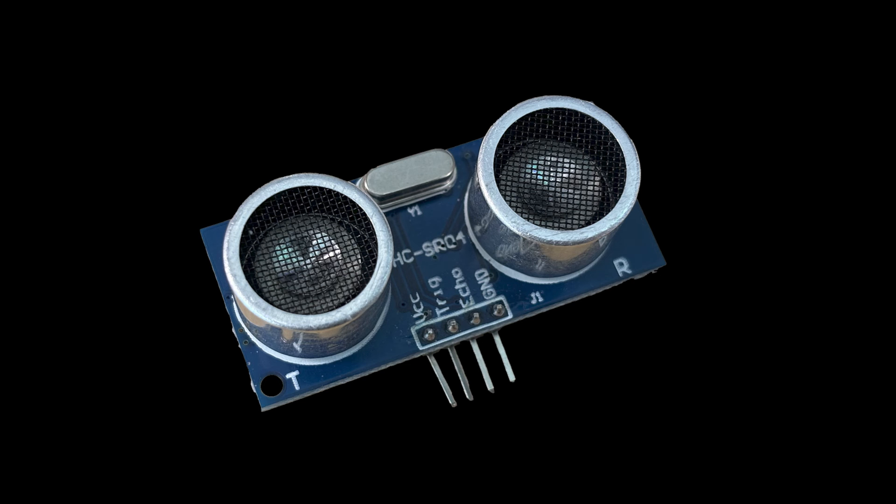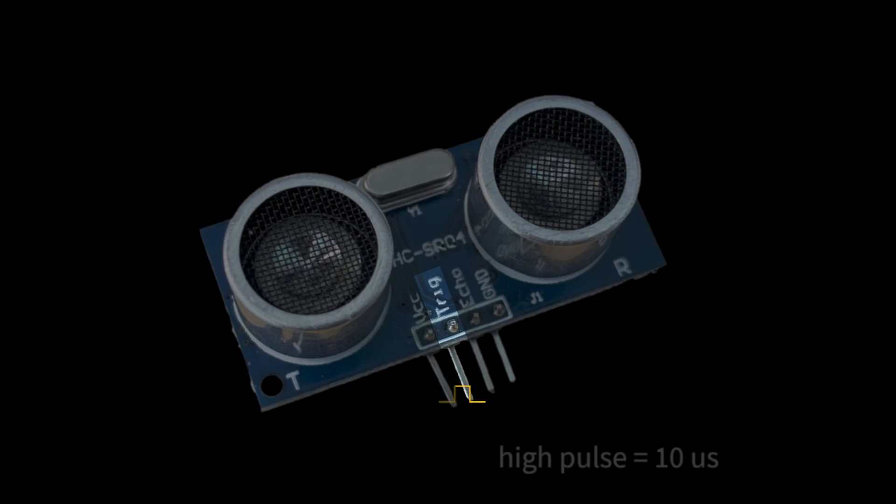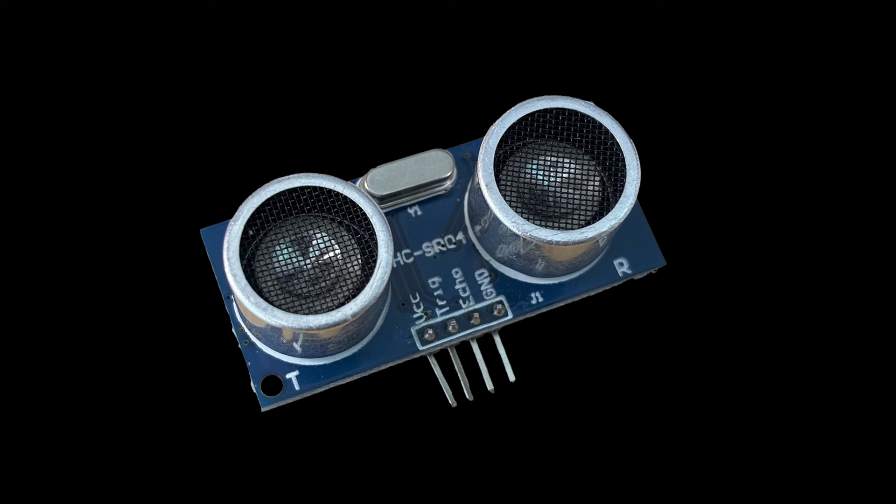The ultrasonic sensor works with the microcontroller using the input capture unit. First, send a high pulse of duration 10 microseconds to the ultrasonic sensor trigger pin using any output pin on the microcontroller. The ultrasonic sensor will emit an ultrasonic sound wave and wait for that wave to be returned to the unit. When this happens, the sensor will emit a square wave on the echo pin with a high period proportional to the amount of time it takes for the sound wave to return, which is proportional to the distance of the nearest obstacle.